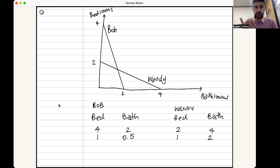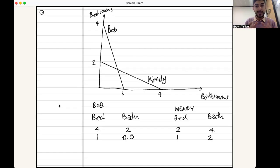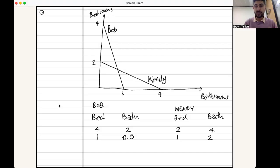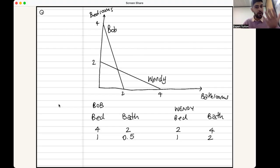On the basis of that, who has a comparative advantage in the production of bedrooms? Whose opportunity cost is lower? Very obviously Bob. I could have told you Bob should specialize in bedrooms and Wendy in bathrooms just by looking at the data, but I wanted you to understand the maths. Bob specializes in bedrooms and Wendy in bathrooms. Assuming a bedroom and bathroom have the same monetary value, the obvious trade is Bob gives Wendy two bedrooms and Wendy gives Bob two bathrooms.